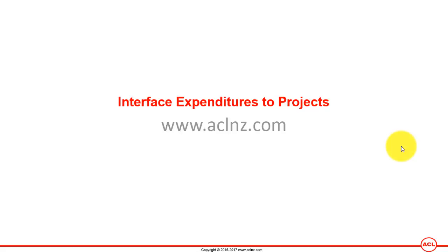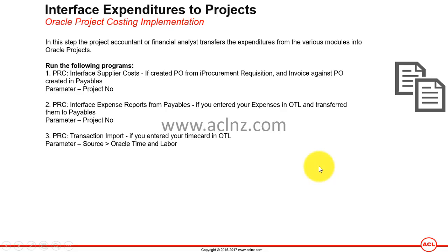Just a quick recap: after creating projects, getting them approved, creating the budget funding, we started working on transactions. We created transactions such as timesheets, expense reports, iProcurement acquisitions that we converted to a PO, and then paid off via an AP invoice. All those transactions generated invoices in the Accounts Payables module, and those invoices are still sitting in Accounts Payables and need to be imported into Oracle Projects.